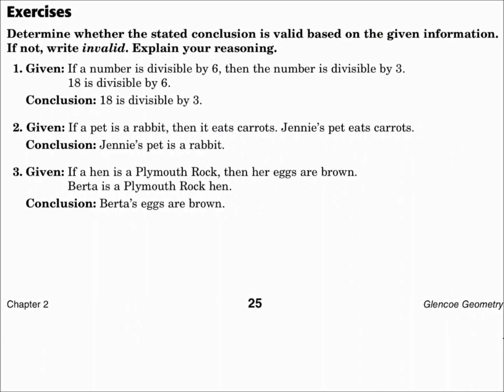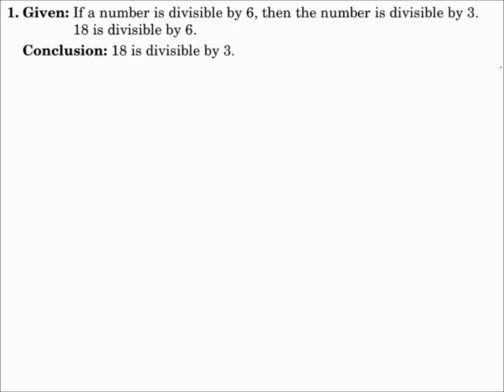Determine whether the stated conclusion is valid based on the given information. If not, write invalid and explain your reasoning. Number 1. If a number is divisible by 6, then the number is divisible by 3. 18 is divisible by 6, so the conclusion, 18 is divisible by 3.